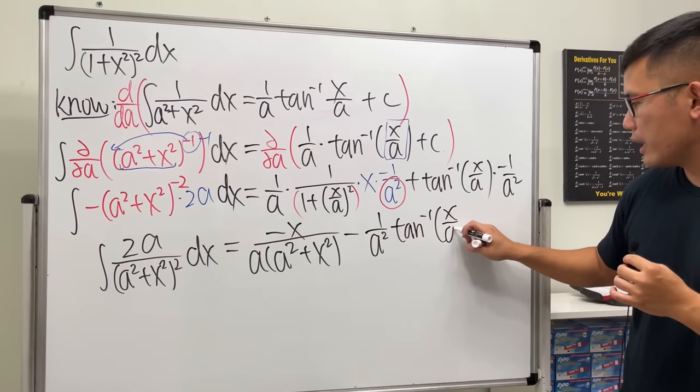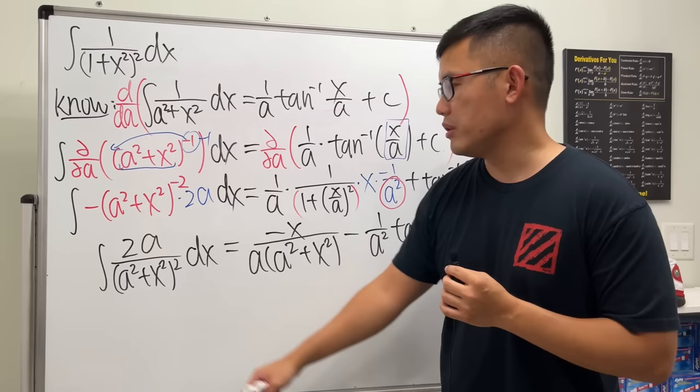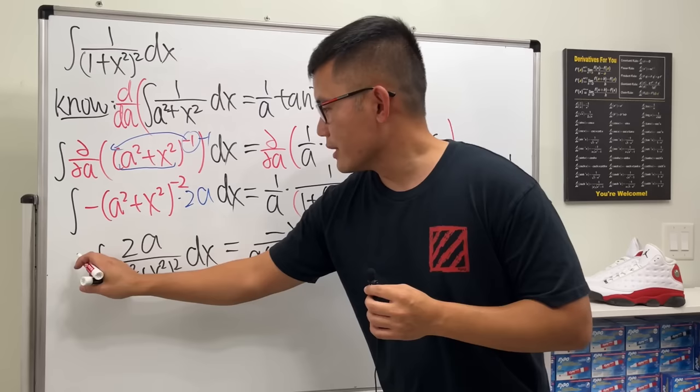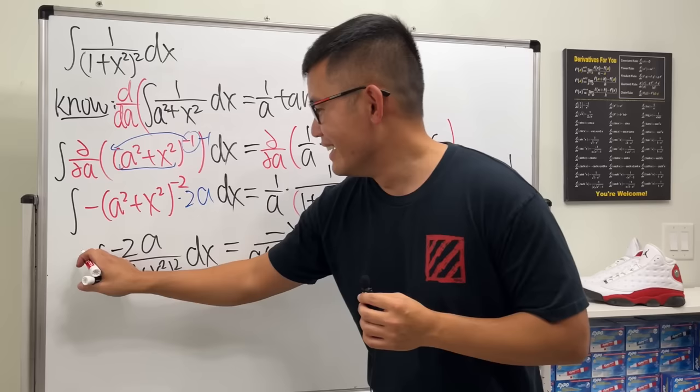We're pretty much done, but I would like to divide everybody by 2A here so that it's cleaner. Oh sorry, it should be negative right here—negative 2A. So let's divide everybody by negative 2A.